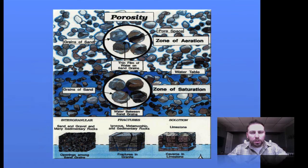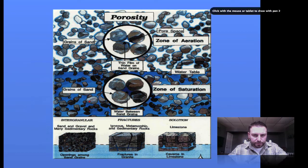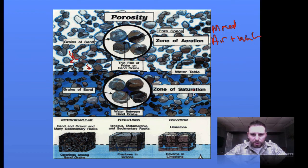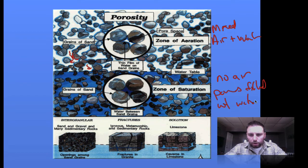We can take a closer look at the sediments making up these layers. In the zone of aeration, water surrounds the particles but there are open air pockets — the pores are a mix of air and water. In the zone of saturation, there is no air; the pores are completely filled with water, and the water table lies right on top of that zone.